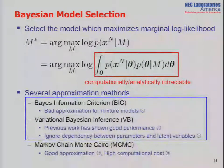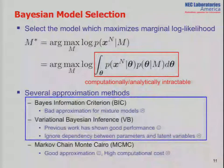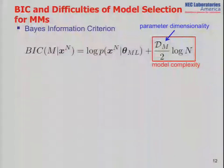Our method is a kind of intermediate between BIC and variational Bayes, so let me focus on these two methods. BIC is a very simple model selection scoring, but BIC is not good for mixture models.